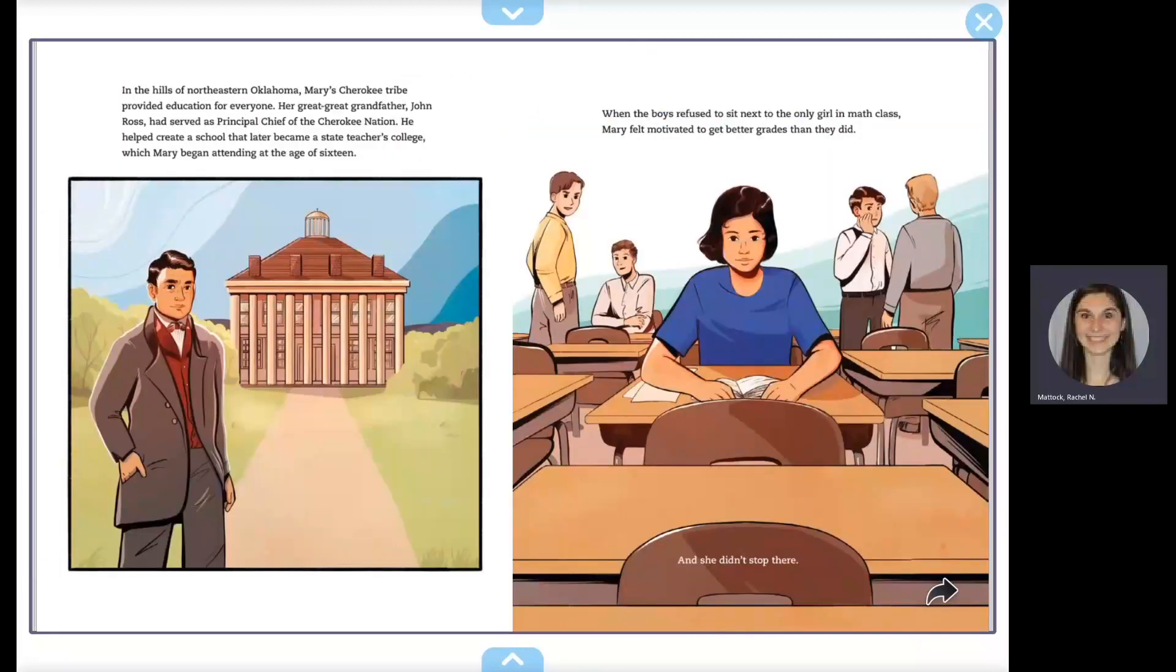In the hills of northeastern Oklahoma, Mary's Cherokee tribe provided education for everyone. Her great-great-grandfather John Ross had served as principal chief of the Cherokee Nation. He helped create a school that later became a state teachers college, which Mary began attending at the age of 16.